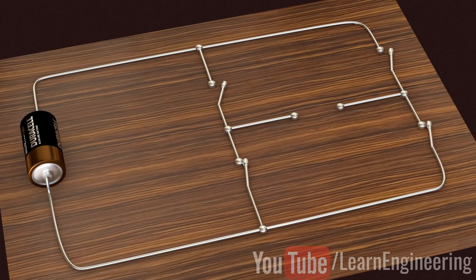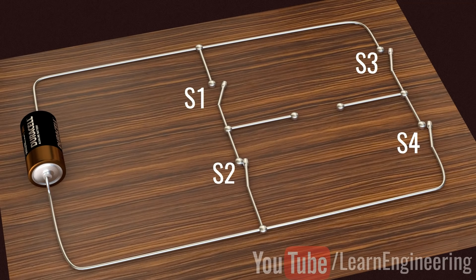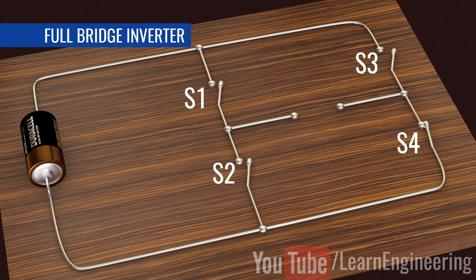Let's build an interesting circuit as shown with four switches and one input voltage. This circuit is known as full bridge inverter. The output is drawn between points A and B.